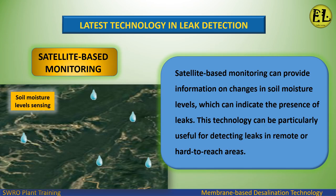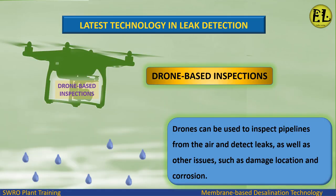Satellite-based monitoring can provide information on changes in soil moisture levels, which can indicate the presence of leaks. This can be particularly useful for detecting leaks in remote or hard-to-reach areas. Drone-based inspections allow drones to inspect pipelines from the air and detect leaks as well as other issues such as damage location and corrosion.